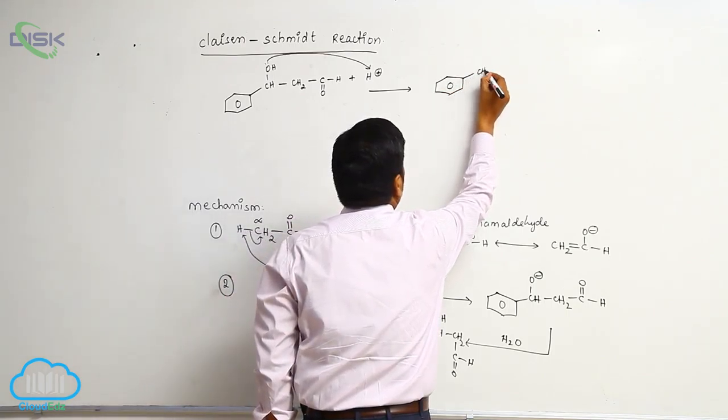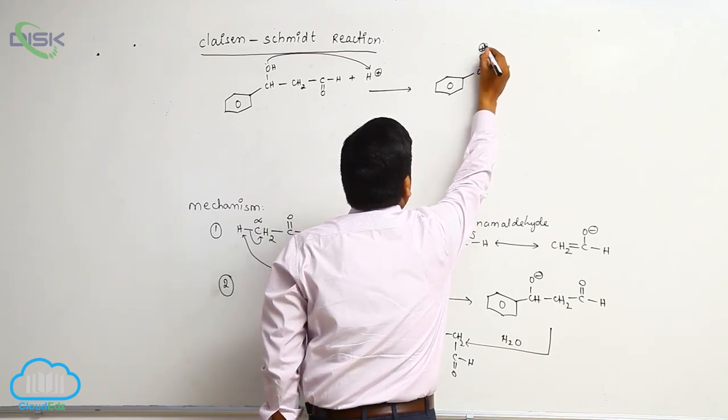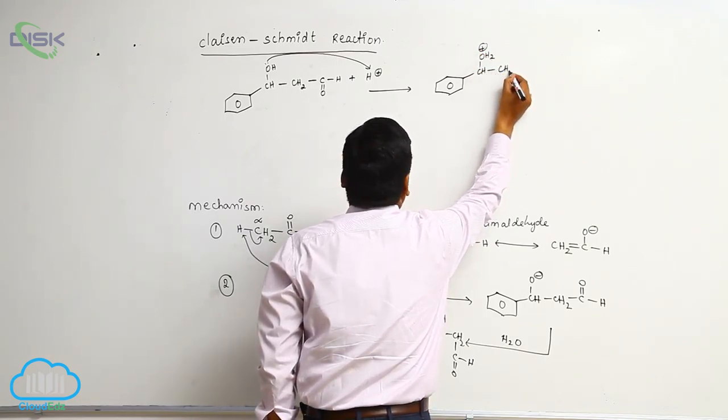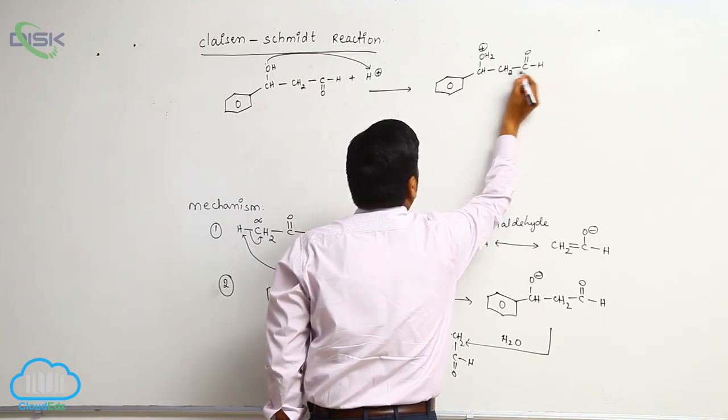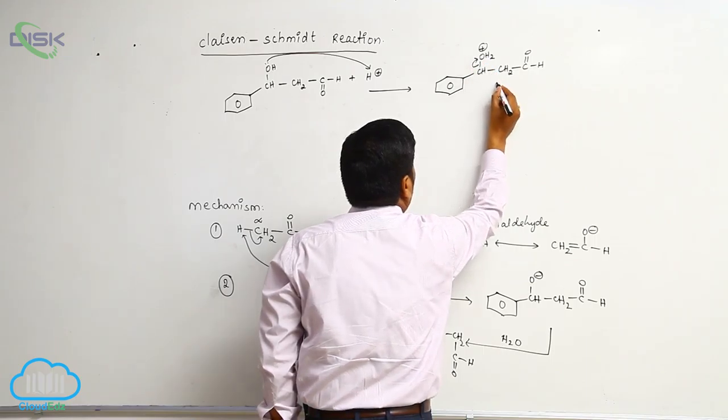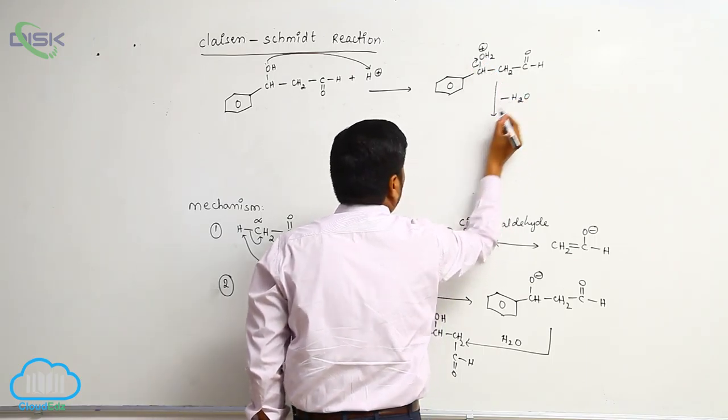Now CH, here is the water molecule. Then CH2, C double bond O, H. Loss of water molecule takes place, loss of H2O.